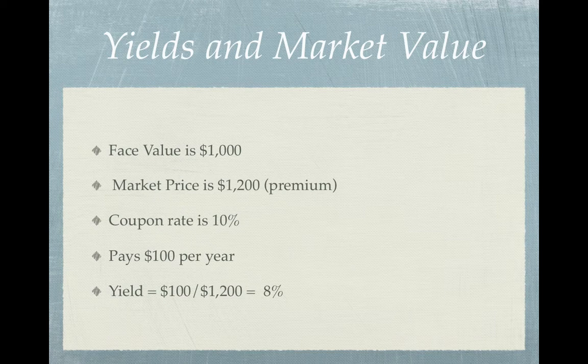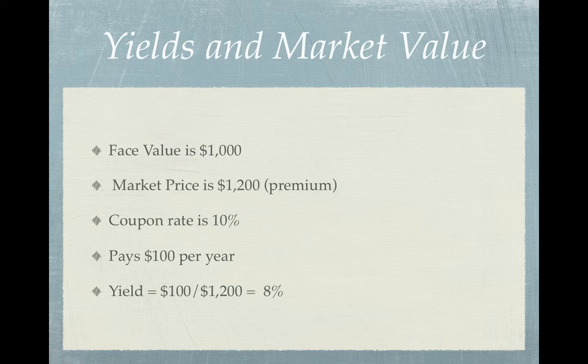Now let's look at what happens if we purchase this California bond at a premium. If bought at a premium, let's say the market price is $1,200. We know our yield will be less. We will still receive that $100 each year based on the coupon rate, but it's less than 10% of the purchase price of the bond. So in this case, the bond price increased, but the percentage yield decreased.